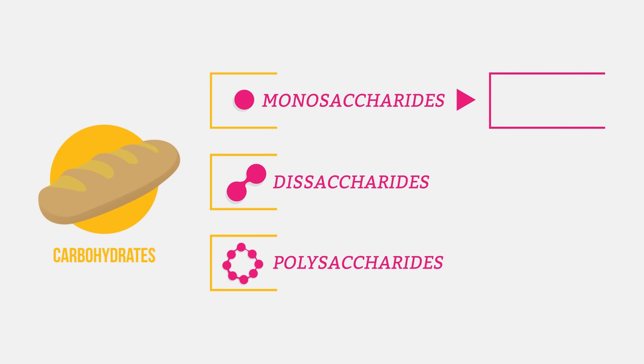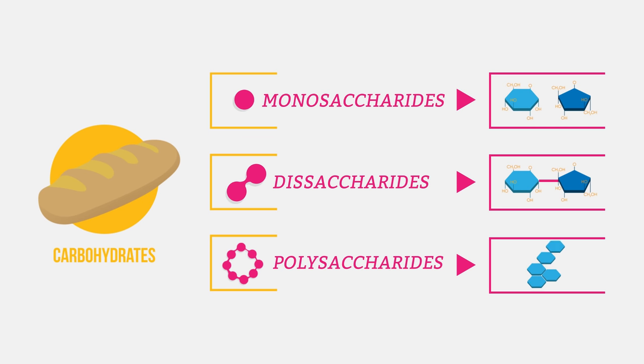Simple sugars like glucose and fructose are monosaccharides. Sucrose, which is made up of two simple sugars joined together, is a disaccharide. And some carbohydrates are polymers that are made up of lots of sugars joined together, and so are called polysaccharides.